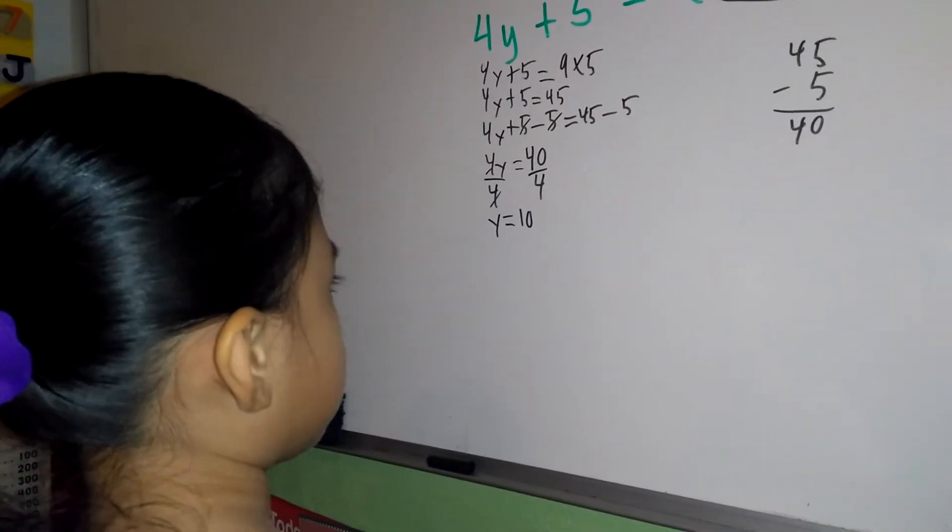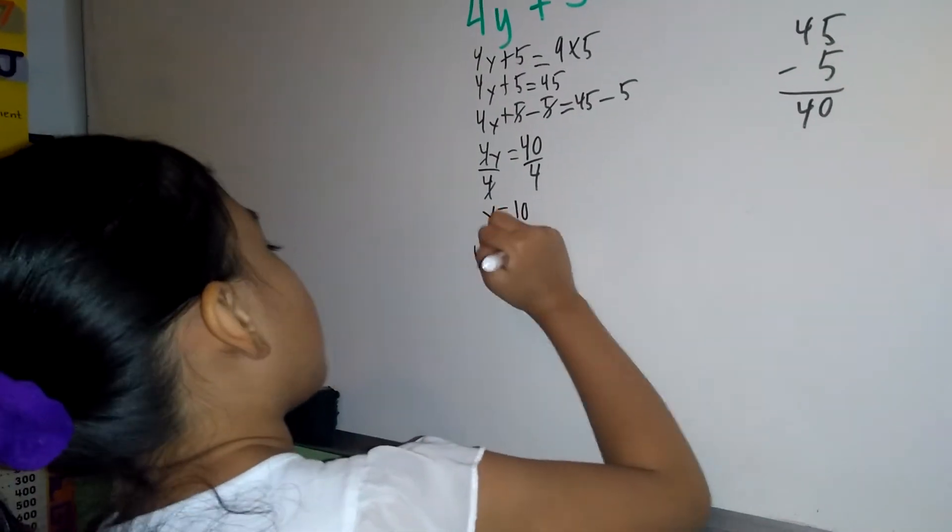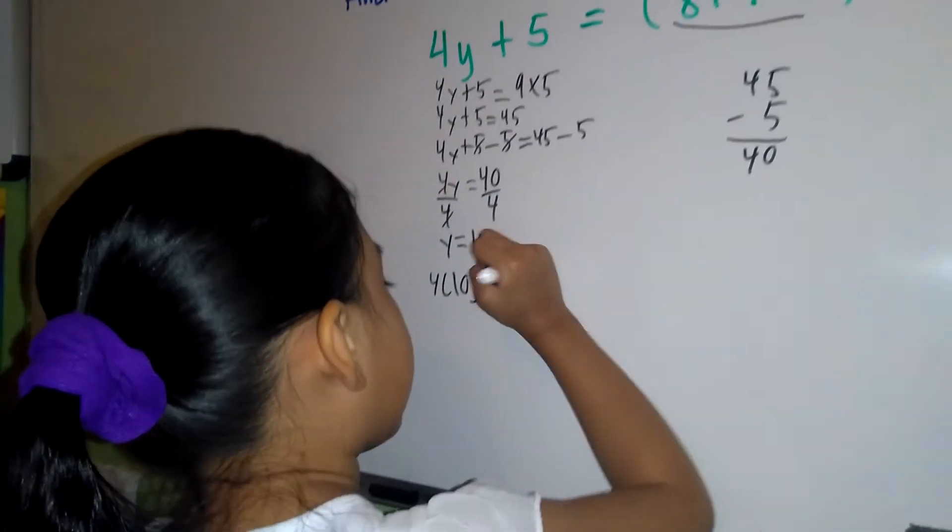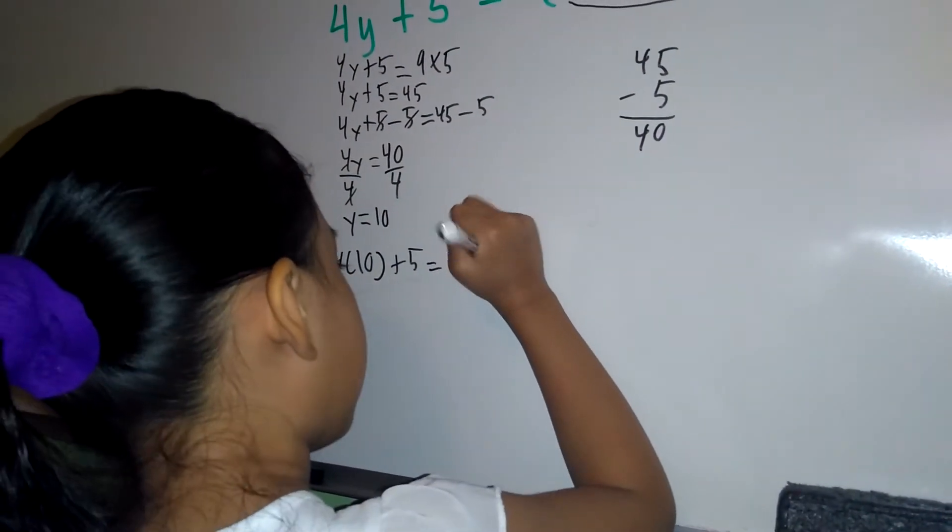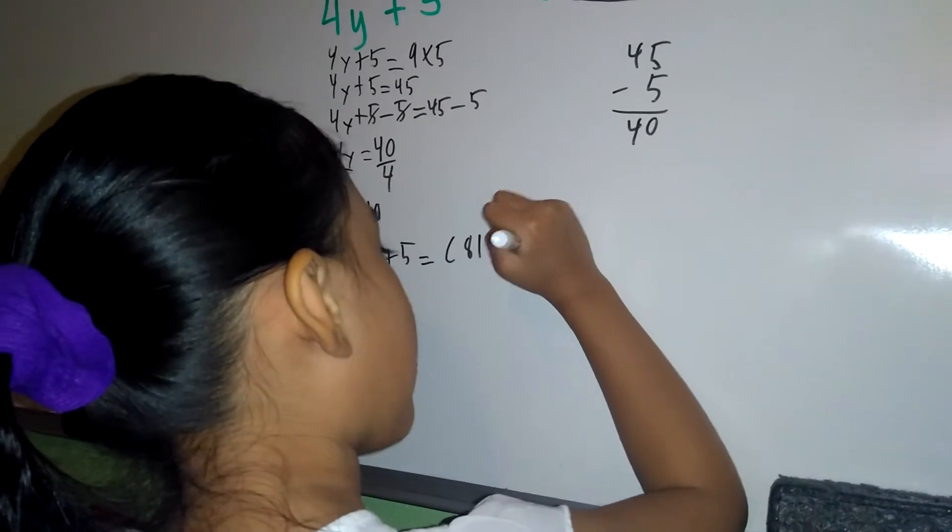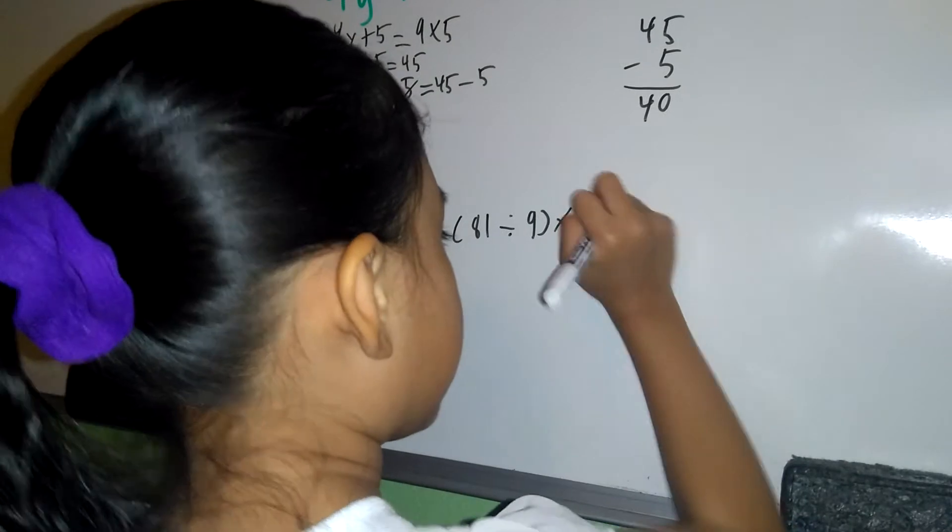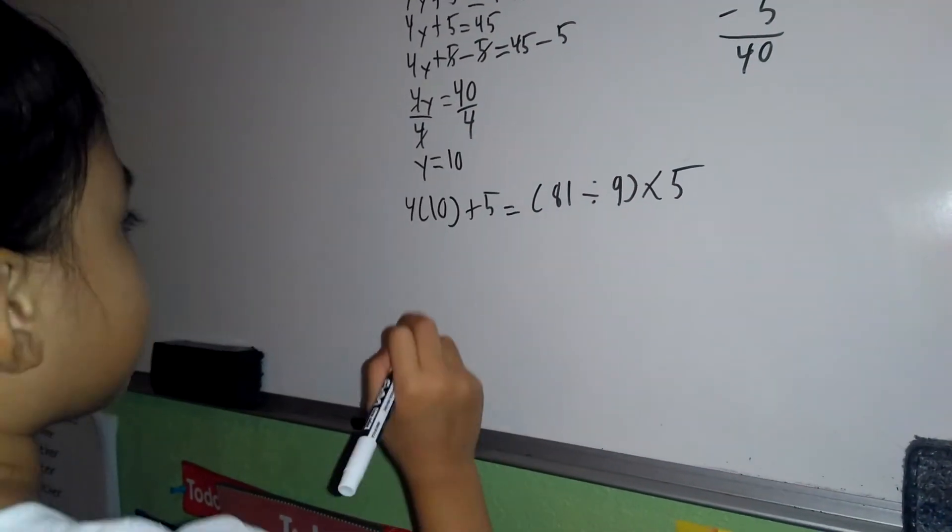Now let's substitute the value of y. 4 times 10 plus 5 equals 81 divided by 9 times 5. 4 times 10 equals 40.